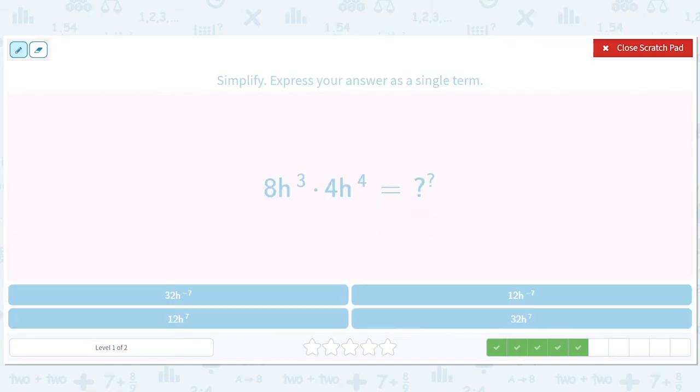Okay, over here, we have eight and four, which is 32. And we have three and four. So we have h to the three plus four, which gives us 32h to the seventh.